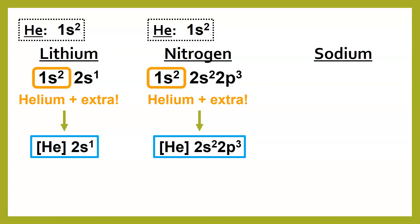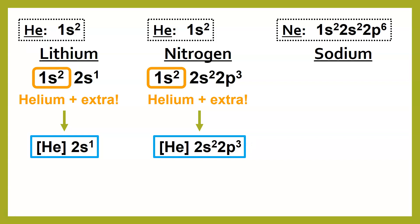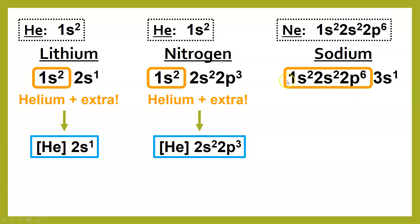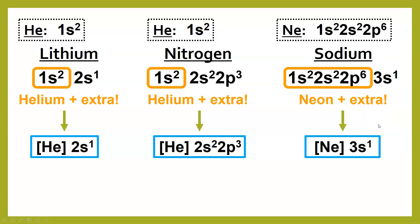For sodium, the noble gas that comes before it is neon. Sodium's configuration has 1s2, 2s2, 2p6 — the whole first three parts match neon. So instead of writing all of that, we just write neon in brackets plus a little extra. On something like lithium this doesn't seem like much of a shortcut, but when elements get bigger and bigger, you can see that this makes our configurations much, much shorter.